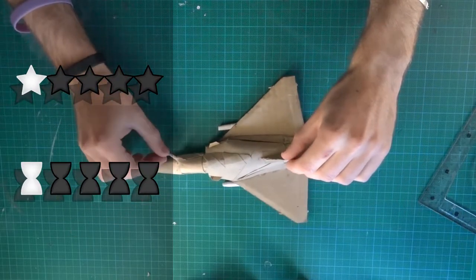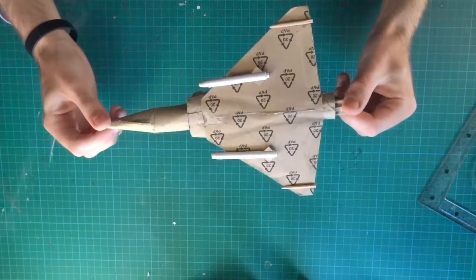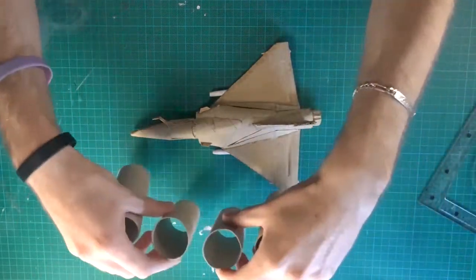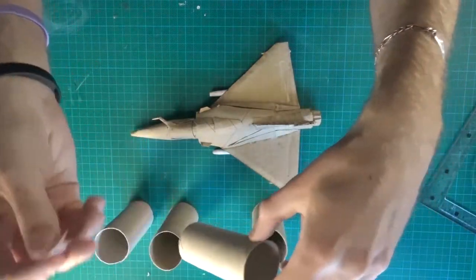This model is easy, that takes not much time. And for this build, I will use 4 empty toilet paper tubes.